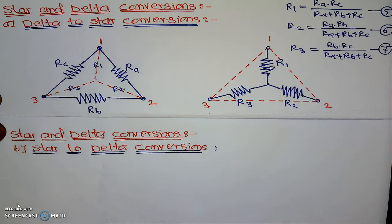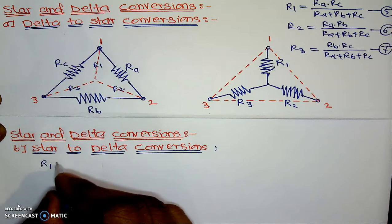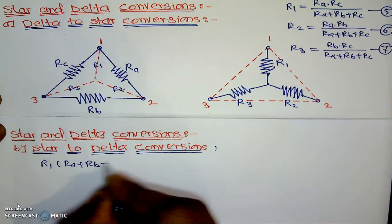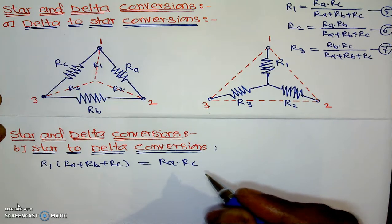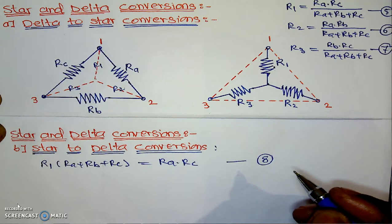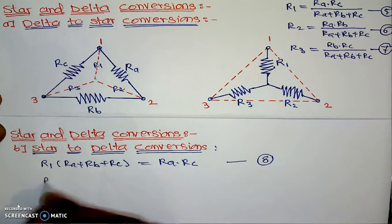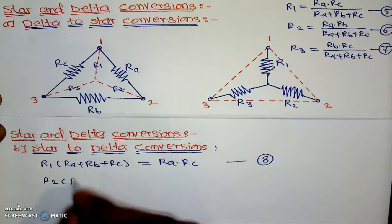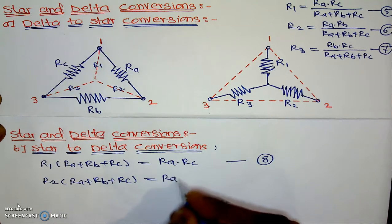We will use similar equations for the conversion of star to delta. If I modify equation 5 by shifting the denominator to the left-hand side, the equation becomes: R1 in bracket (Ra plus Rb plus Rc) equals Ra into Rc — and we name this equation number 8. Similarly, from equation number 6 we have: R2 in bracket (Ra plus Rb plus Rc) equals Ra into Rb.